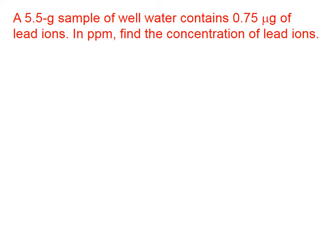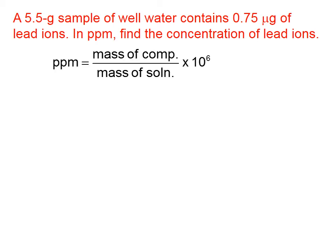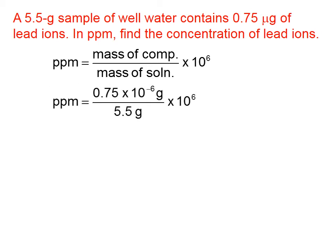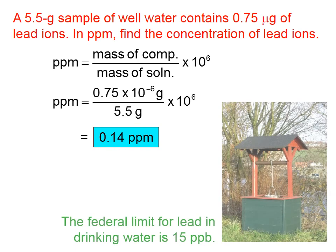Let's try a problem. A 5.5 gram sample of well water contains 0.75 micrograms of lead ions. Find the concentration of lead ions in parts per million. Parts per million is the mass of the component we're interested in divided by the total mass. The mass of the lead ions is 0.75 micrograms, or 0.75 × 10⁻⁶ grams. The mass of the solution is 5.5 grams. We multiply by 10⁶ to get parts per million, giving us 0.14 parts per million.